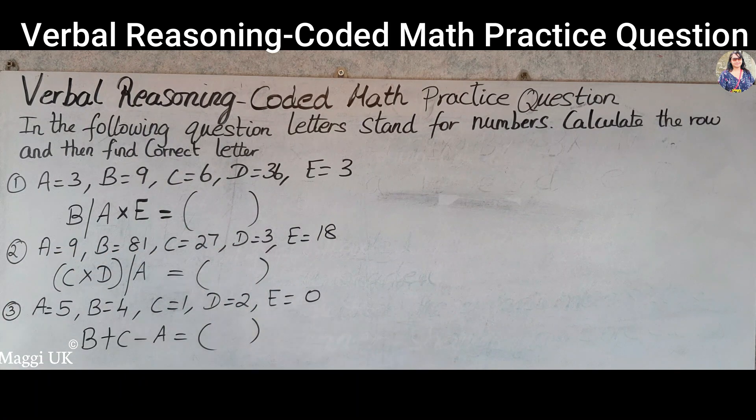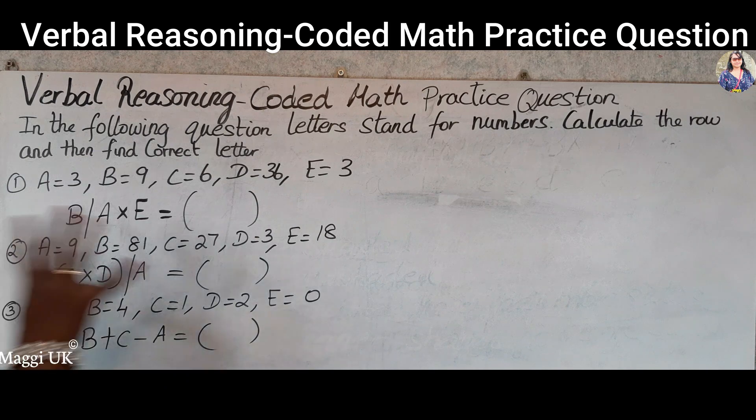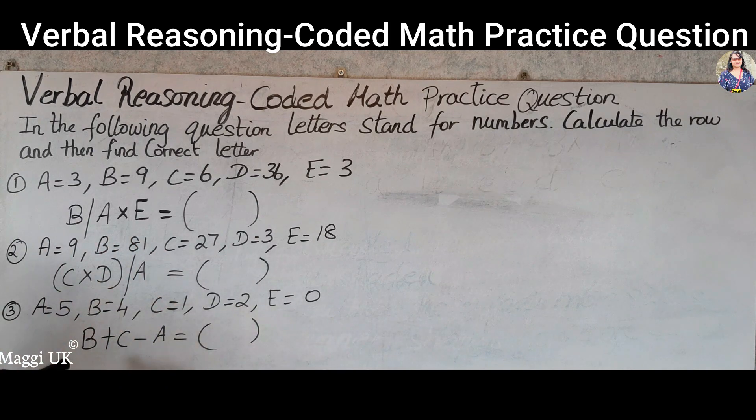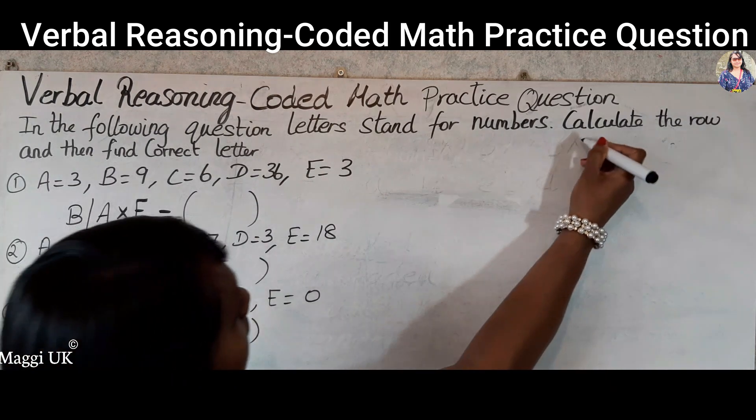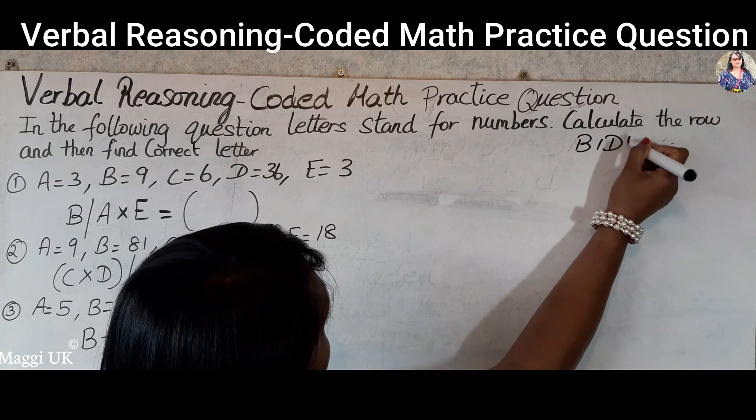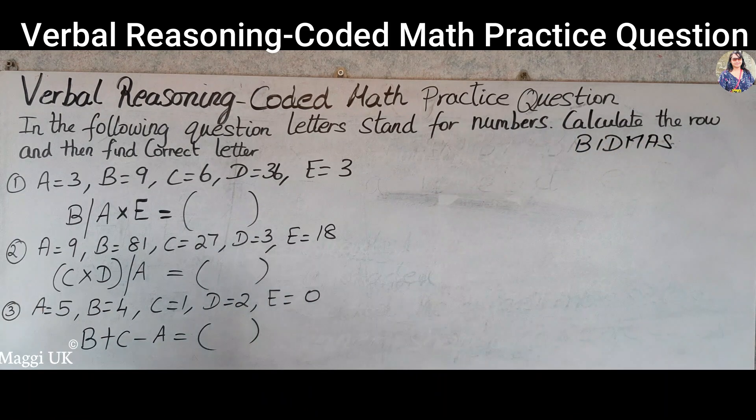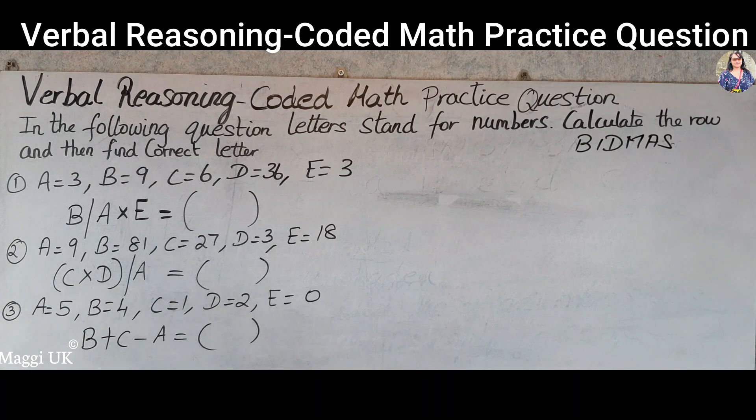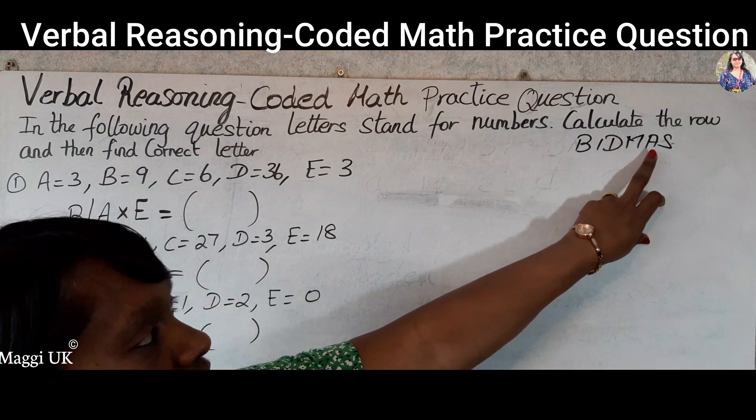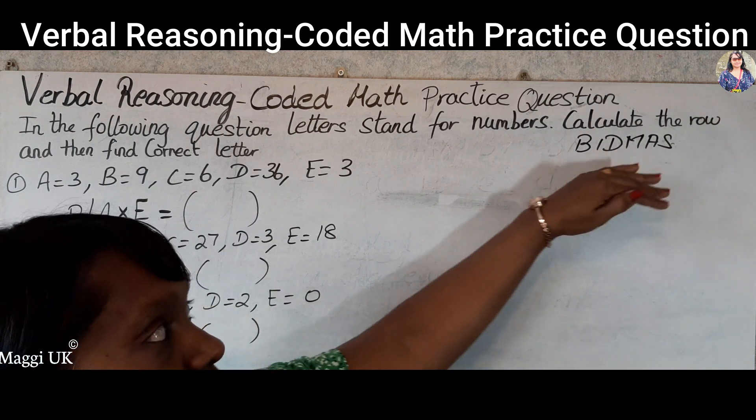When you do any kind of unity problem, use the BIDMAS rule. Everyone knows what is BIDMAS: B stands for brackets, I stands for indices, D for division, M for multiplication, A for addition, and S for subtraction. You need to go in from starting from here to ending with S.